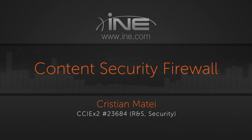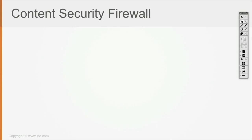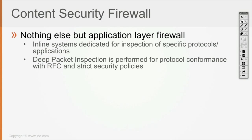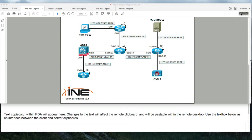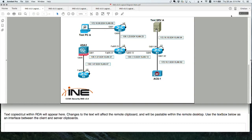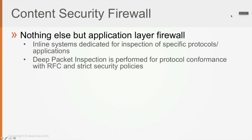Then we have what is called a content security firewall, which is nothing else but an application firewall. So it's a very specific kind of firewall. It's inline — in all cases, it's going to be deployed inline within the system communication, but it's going to be dedicated for specific protocol inspection.